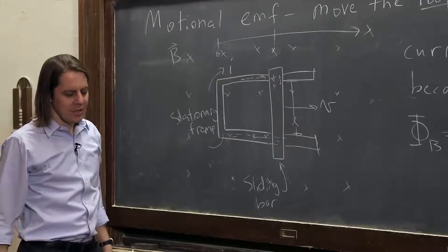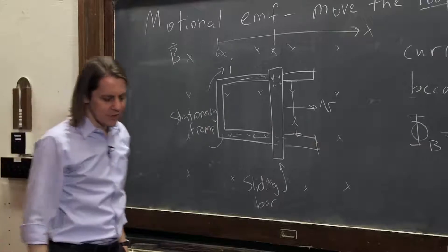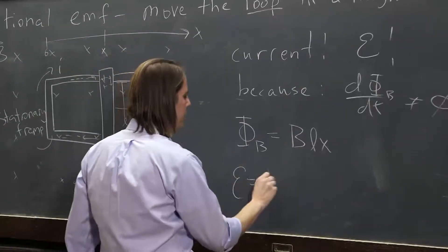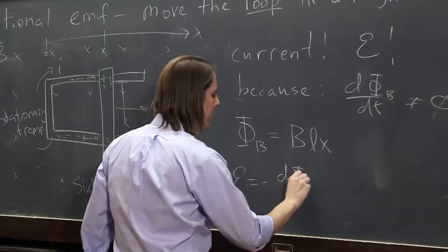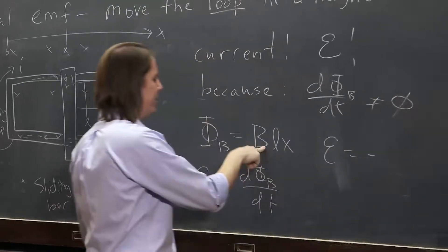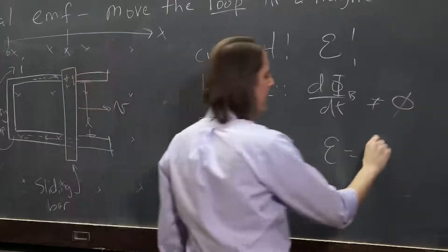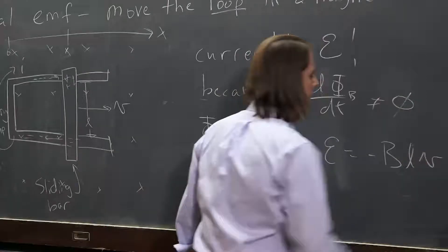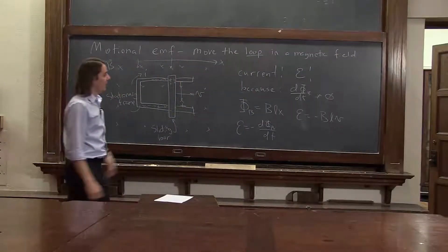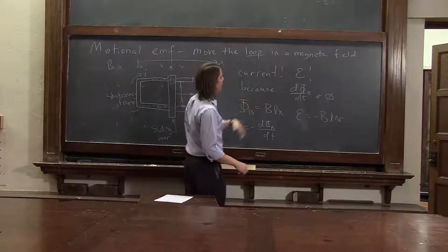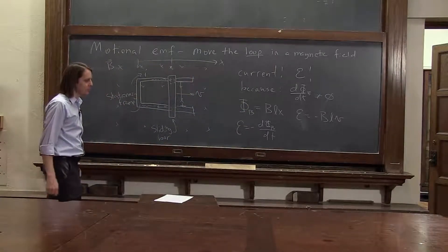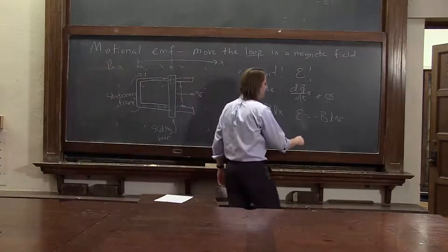so phi B is BLX. And we want to say that the EMF is minus d phi B dt. So the EMF is minus, and the derivative of B and L are constants. So it's minus BLV. So with a combination of Faraday's law and just by looking at the geometry, we can figure out how much current or the EMF induced is BLV.